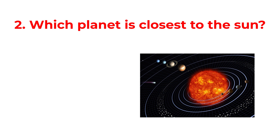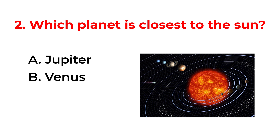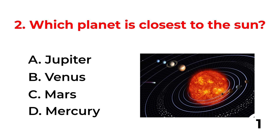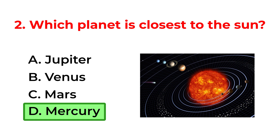Which planet is closest to the sun? A. Jupiter. B. Venus. C. Mars. D. Mercury. The correct answer is option D: Mercury.